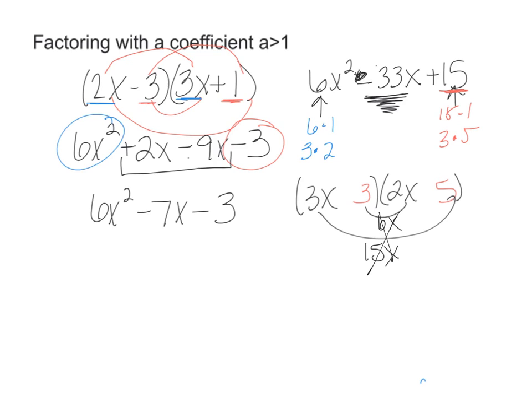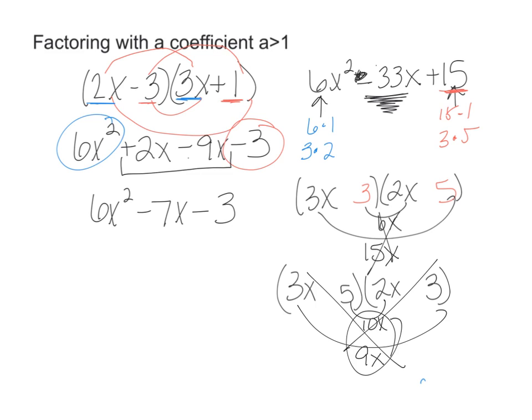So we'll try another way, 3x and 2x. Let's try 5 and 3 this way, so we switch the 5 and the 3. When I do my outside, I get 9x, and my inside, I get 10x, that's 19, not going to give me 33, so that's not going to work.